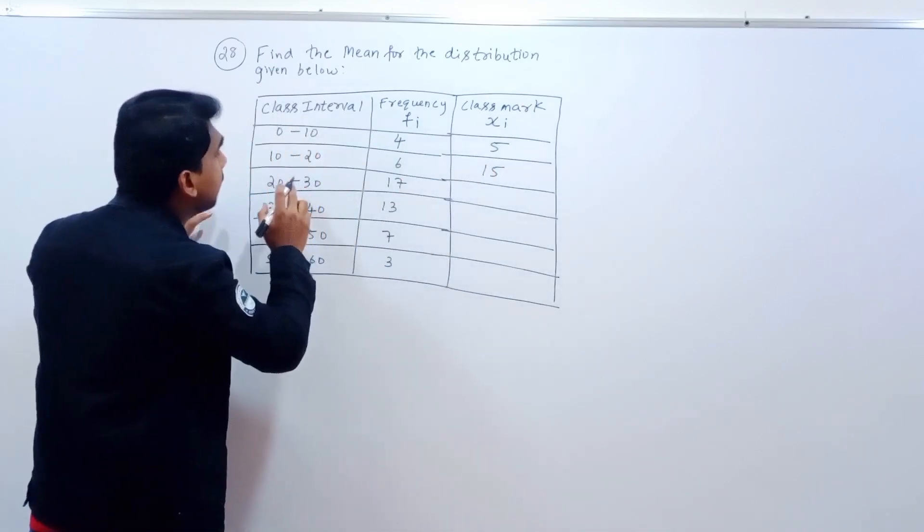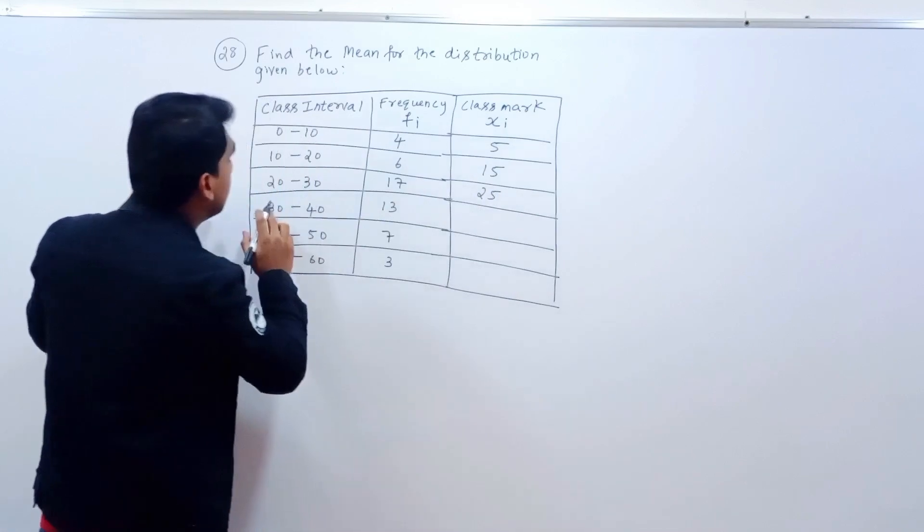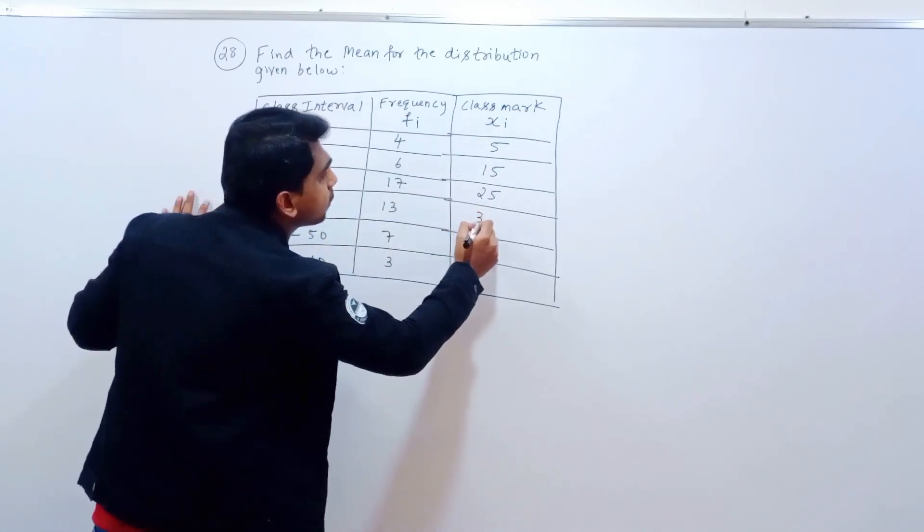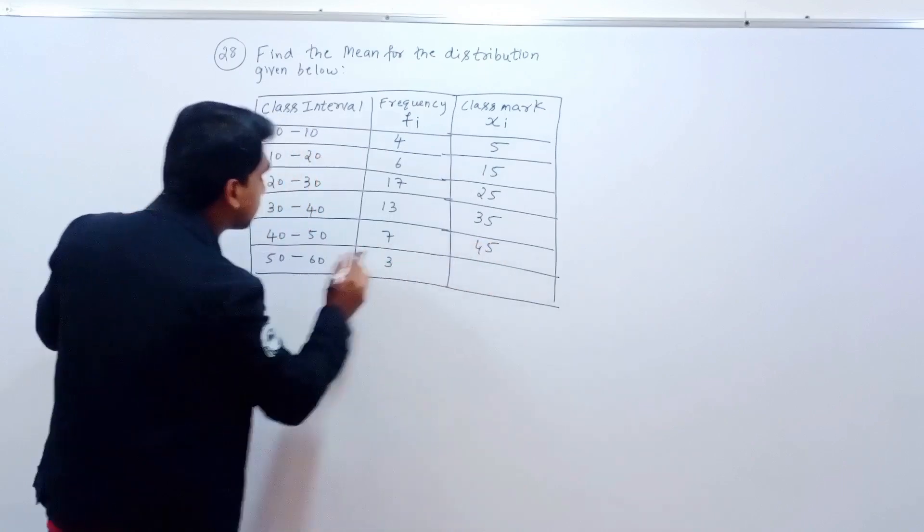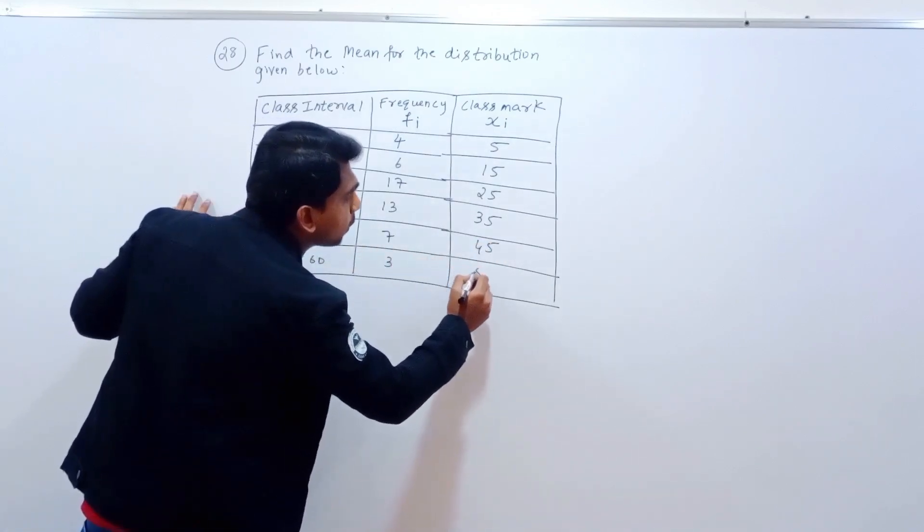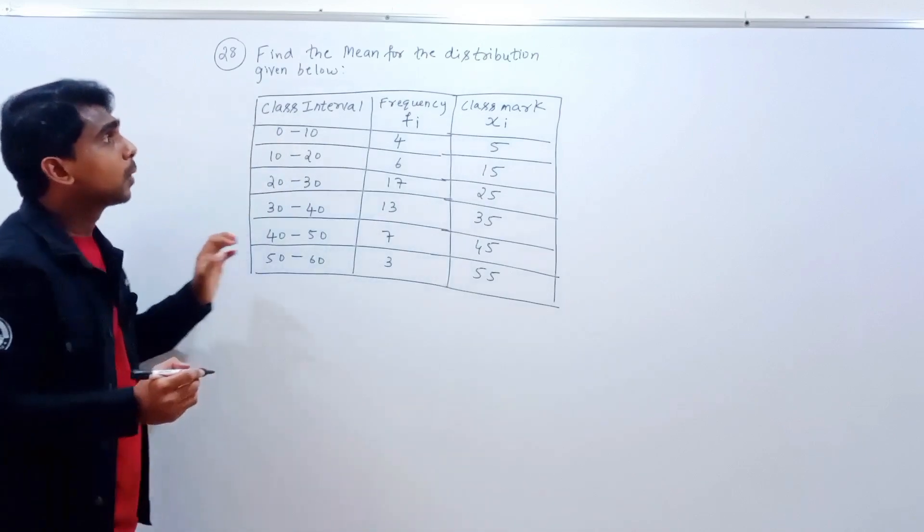20 plus 30 is 50, 50 by 2 is 25. 30 plus 40 is 70, 70 by 2 is 35. 40 plus 50 is 90, 90 by 2 is 45. 50 plus 60 is 110 divided by 2, which is 55.